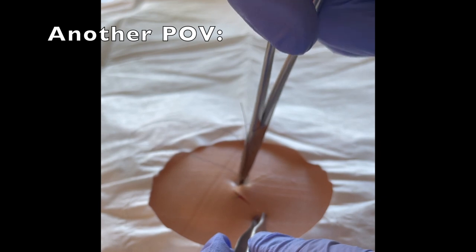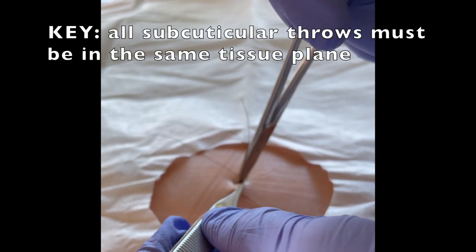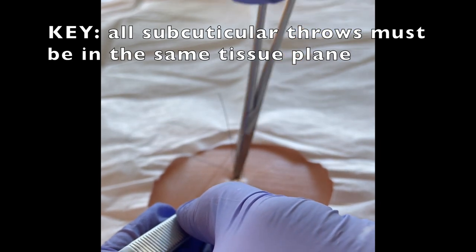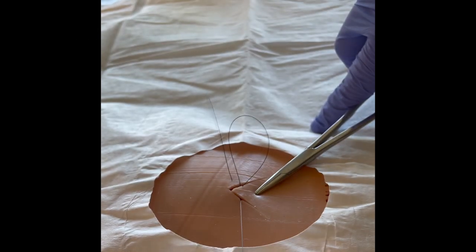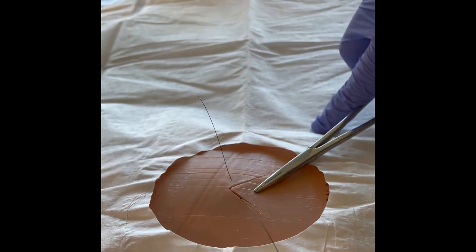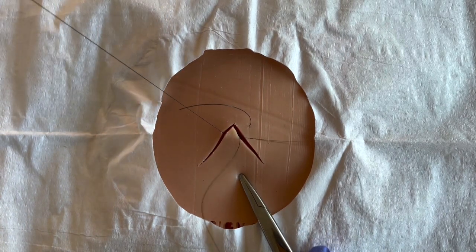Now it's really important that your subdermal, subcuticular throw is in the same tissue plane as where you exited the tissue for your first throw that went epidermal to subcuticular. Otherwise you can end up unintentionally burying that flap edge.